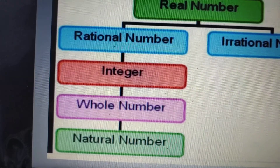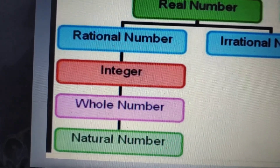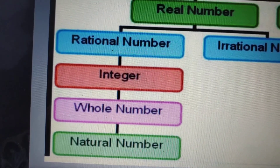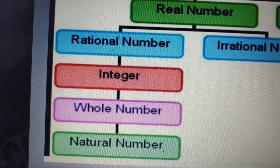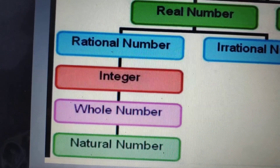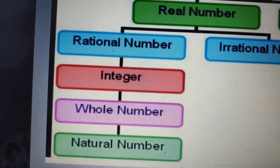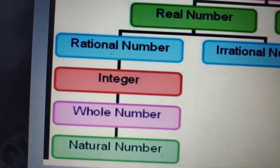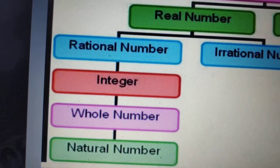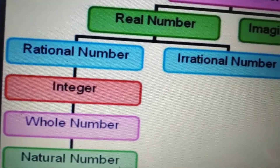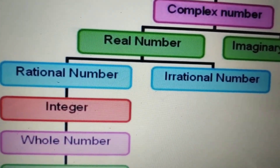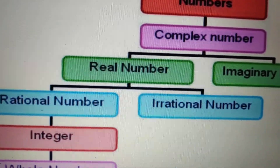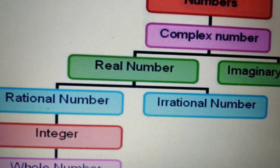If you include the whole numbers along with the negatives of natural numbers, those are your integers. Once you include natural numbers, whole numbers, integers, fractions, and decimals, that forms the set of rational numbers. A number which is not rational is known as irrational. Combining rational and irrational numbers forms the set of real numbers, which you will read in higher classes.